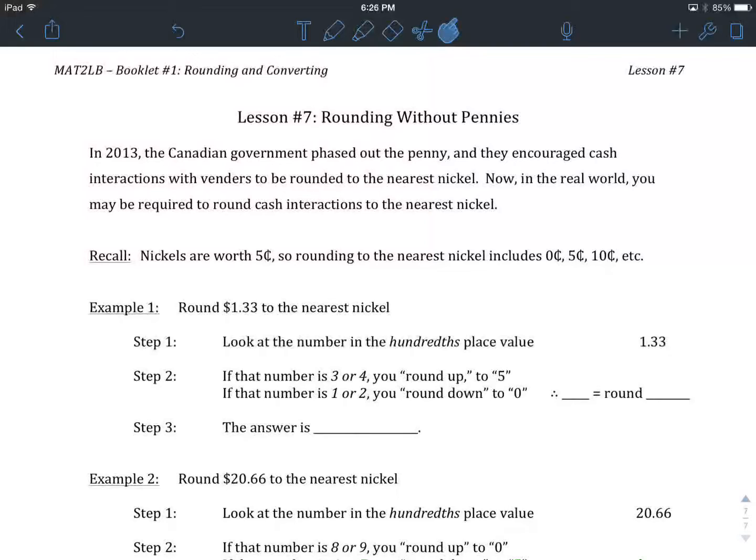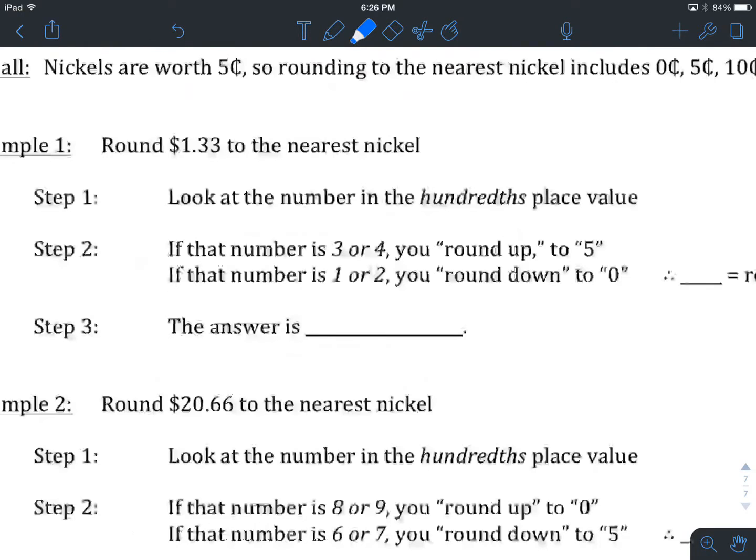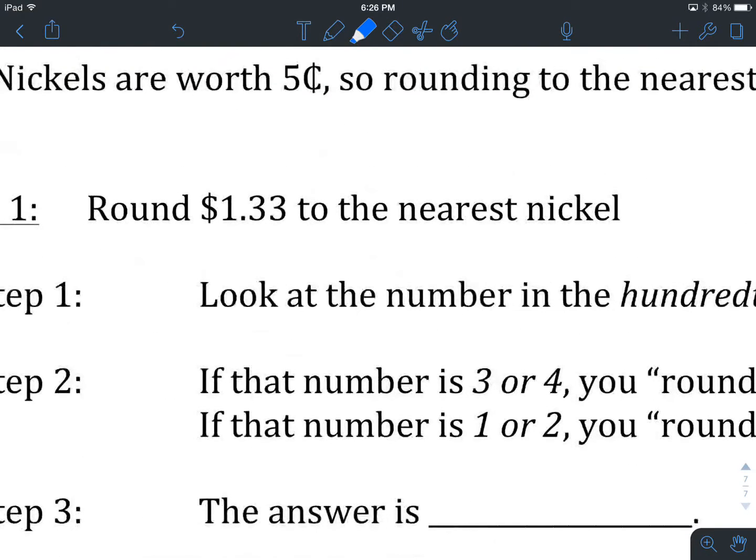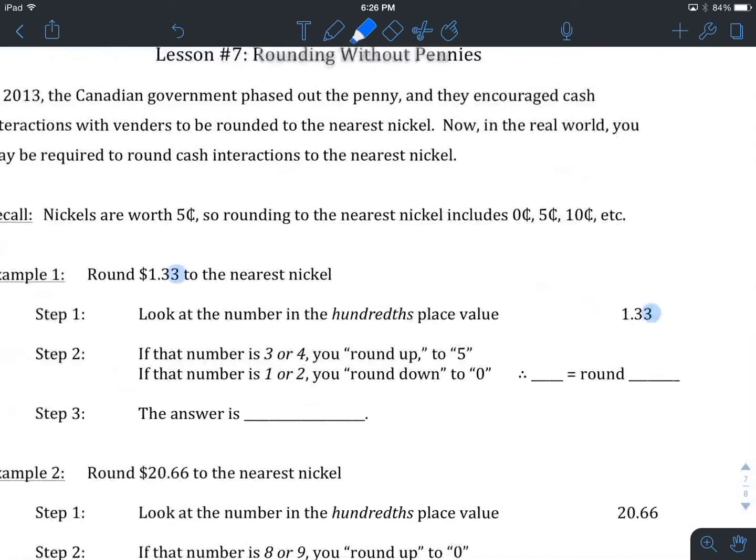Let's take a look at example number 1. Round $1.33 to the nearest nickel. So first thing you want to do, locate the number in the hundredths place value. Here we are, hundredths place value, that's 2 to the right of our decimal place. We've got a 3 there.